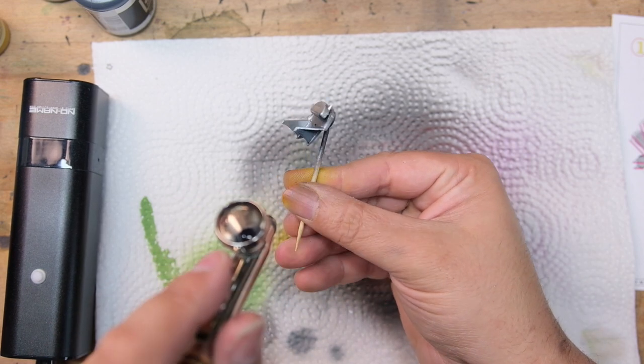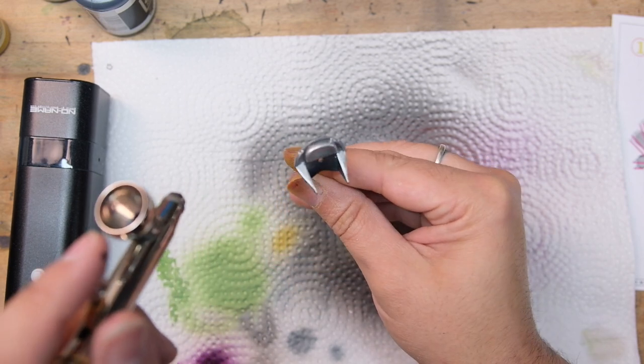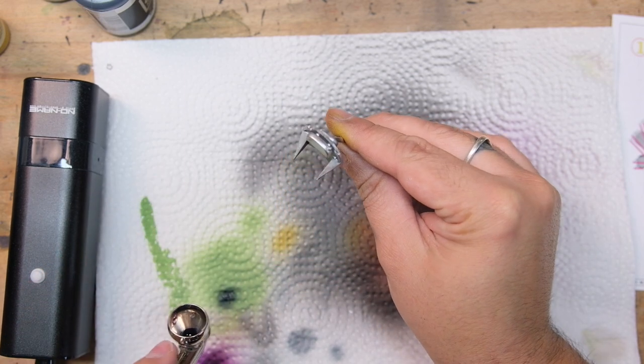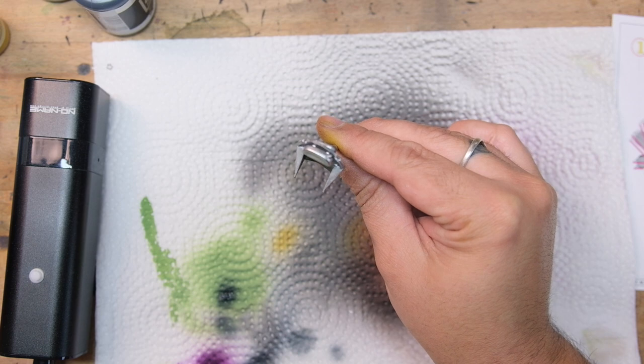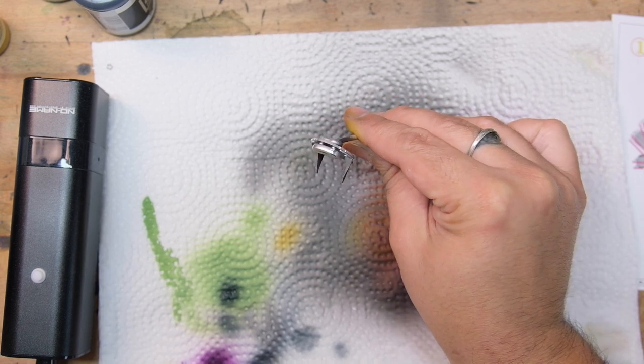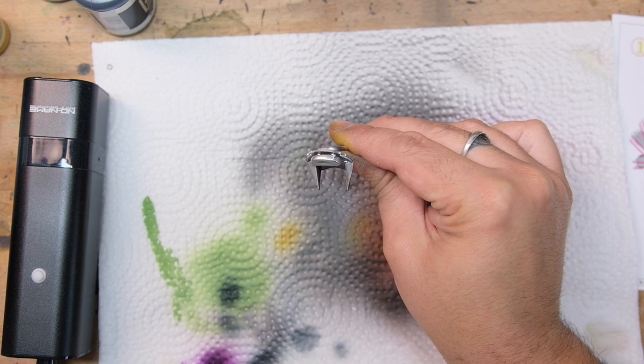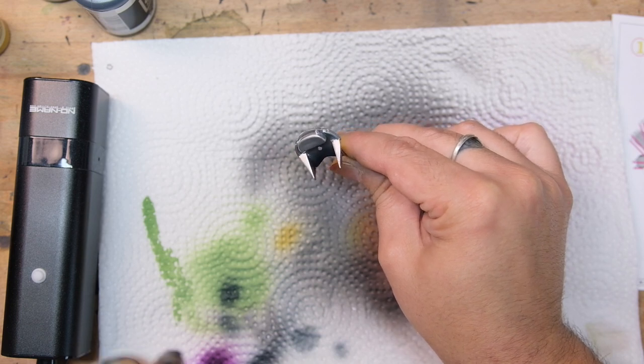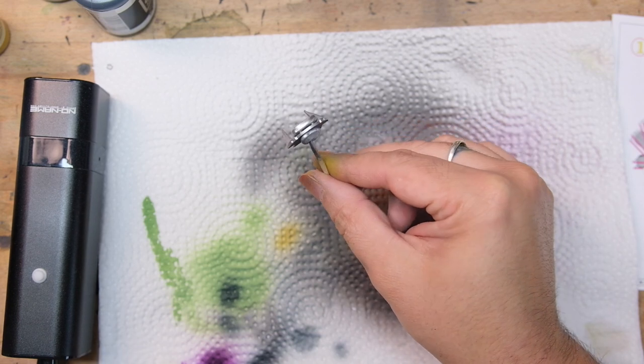The last thing I tested with the compressor was just shooting some acrylic inks. Really acrylic inks are great for kind of testing if you're going to get speckling. And as you can see, it works pretty well.